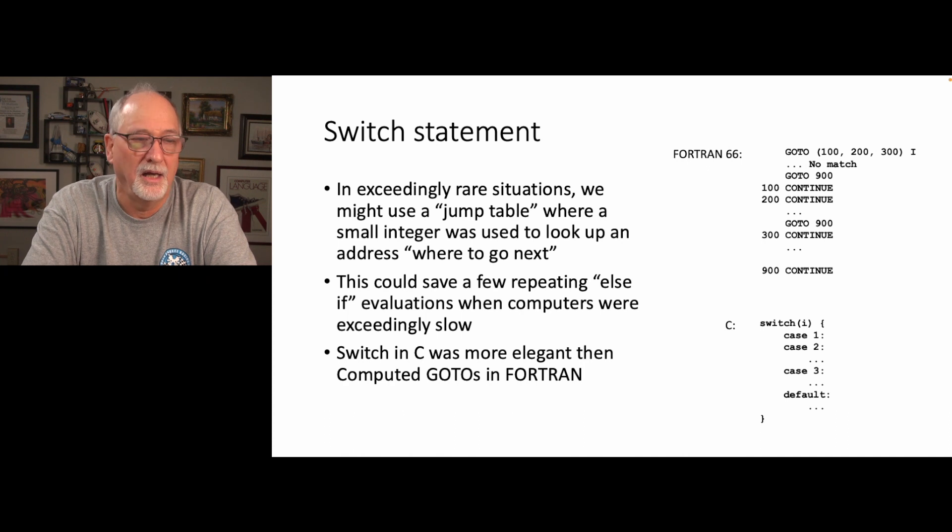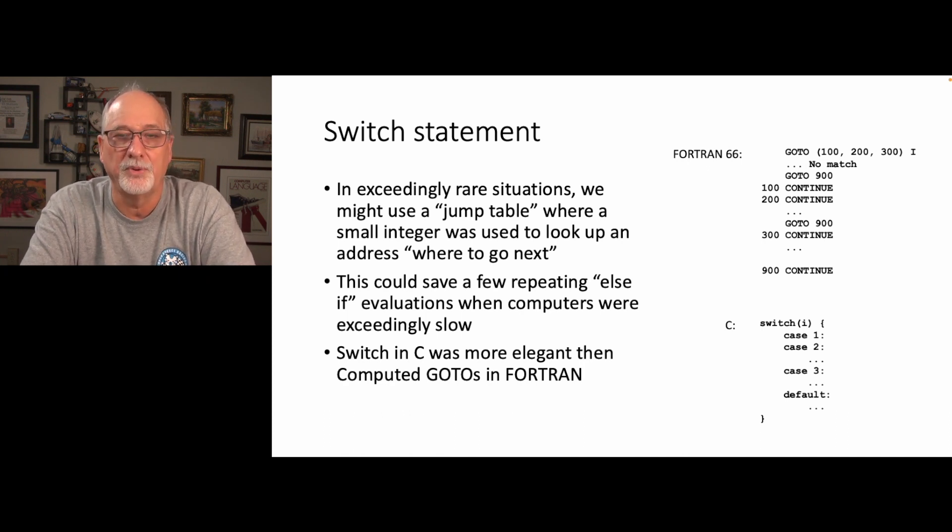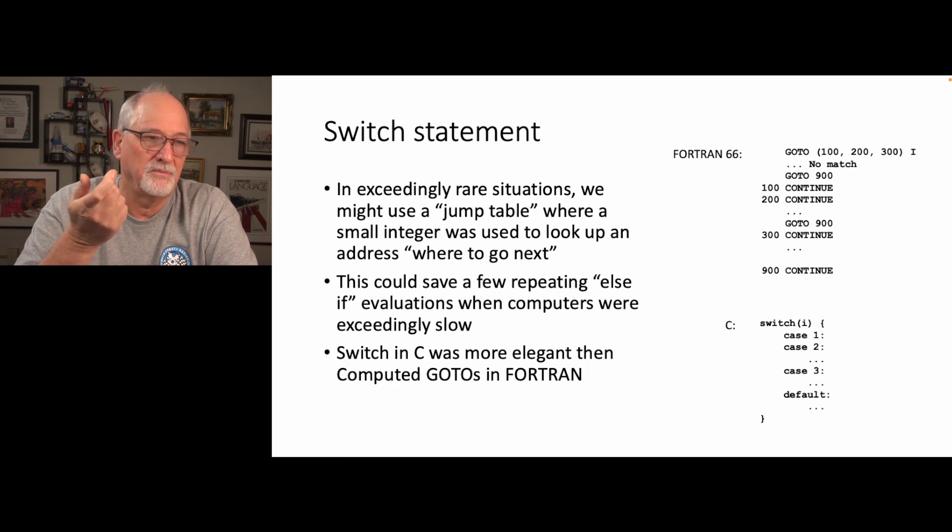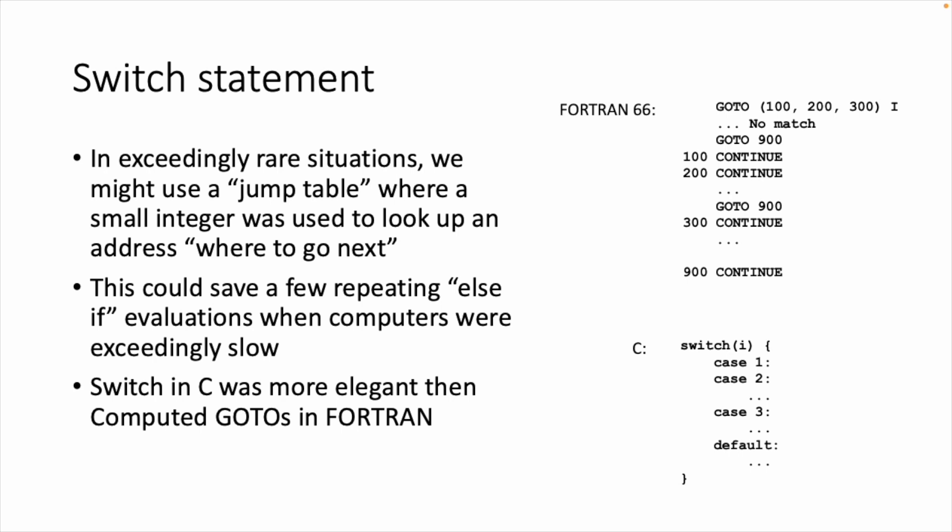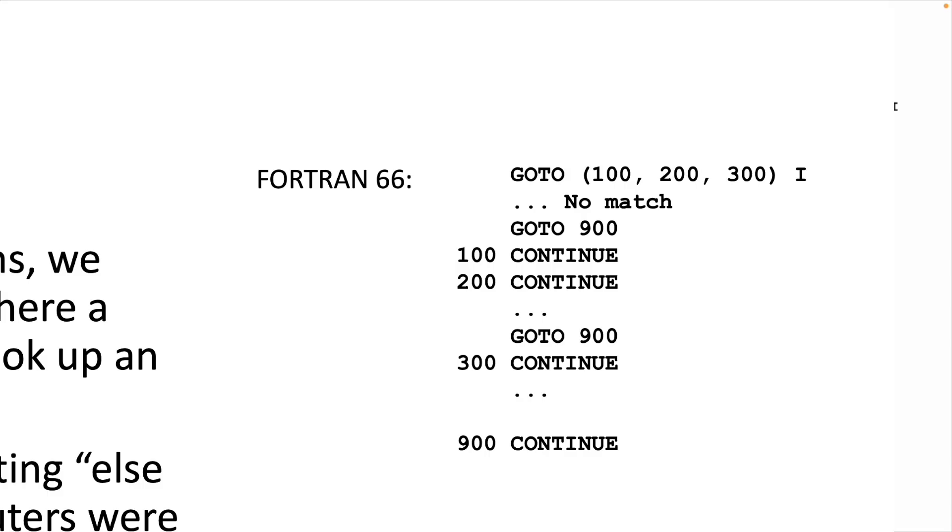The switch statement. I think that the reason that the authors put the switch statement into C is there was a time where we would write code in assembly language using what we call a jump table, where we take a number, maybe mask it so it's only from zero through 16, and then look up a series of addresses and jump through a jump table. And the computed go-to was the way in Fortran of expressing a jump table. But in Fortran, it was just a mess. You got these labels in columns one through six and the continue statement doesn't work like the continue in C and C-like languages. And you had to have these go-to's to get out of the switch statement.